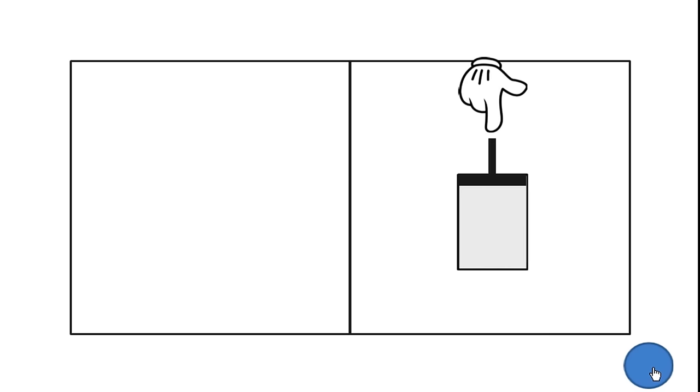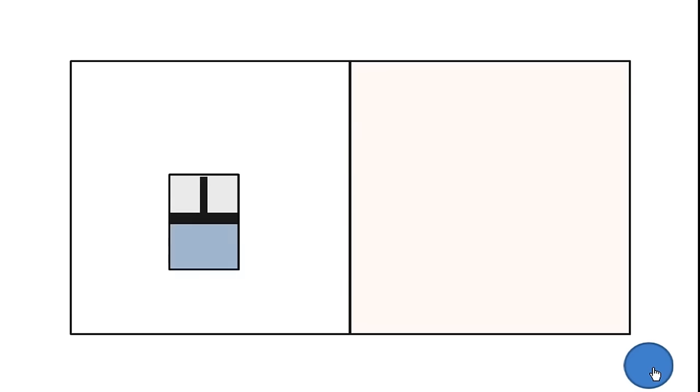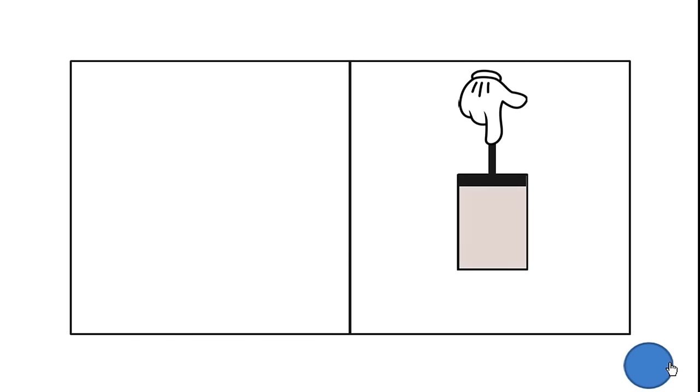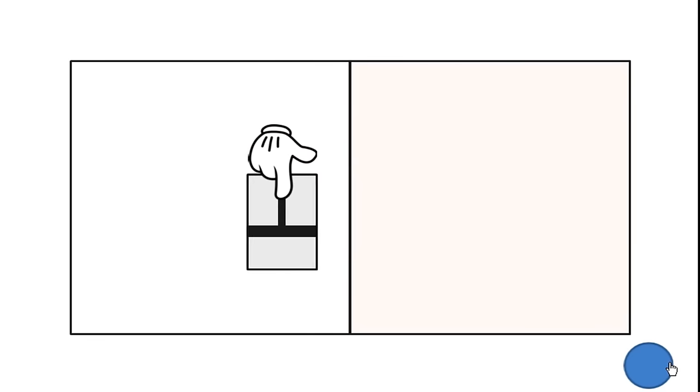If we move the container to room two, compress it so it heats up and allow that heat to escape, and then move the container back to room one and allow it to decompress, then the heat from room one will move into the container. If we repeated this process over and over again, eventually the heat from room one will be pumped to room two.